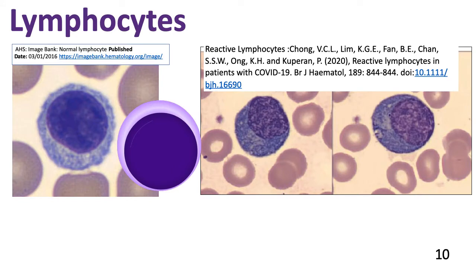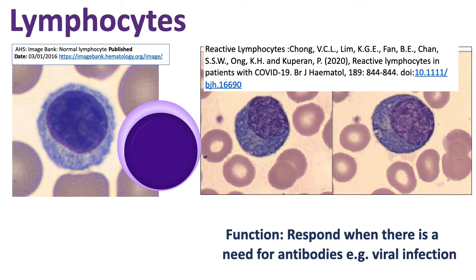Now let's look at the agranulocytes. They have no granules in the cytoplasm and the nucleus is not segmented — it is entire. The first agranulocytes are the lymphocytes. They have a round nucleus that fills up most of the cytoplasm, and the cytoplasm is bluish in color. The function of lymphocytes is to respond whenever there is a need for antibodies, usually following a viral infection, though some bacterial infections may also elicit antibody responses.